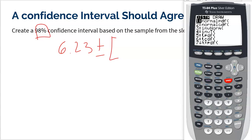We're going to go and grab an invT. 98% confident puts that 0.01 at the bottom. And again, we have 49 degrees of freedom.